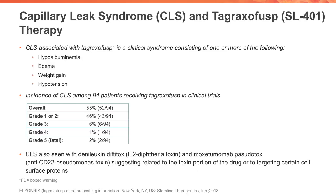In patients with BPDCN receiving tagraxafusp who had capillary leak syndrome, it was associated with a clinical syndrome of one or more of the following symptoms: hypoalbuminemia, edema, weight gain, and hypotension. In the 94 patients who received tagraxafusp in several clinical trials that were part of the FDA approval process, 55% had CLS of any grade — 46% grade 1 or 2, 6% grade 3, 1% grade 4, and 2 patients out of 94 had fatal CLS.